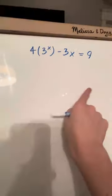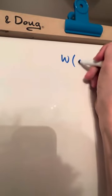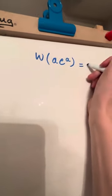So we're going to be solving this. How do we solve this? Well, the first thing is we need to know the Lambert W function. The Lambert W function of a times a to the power of a — and only with a base e — is equal to a.